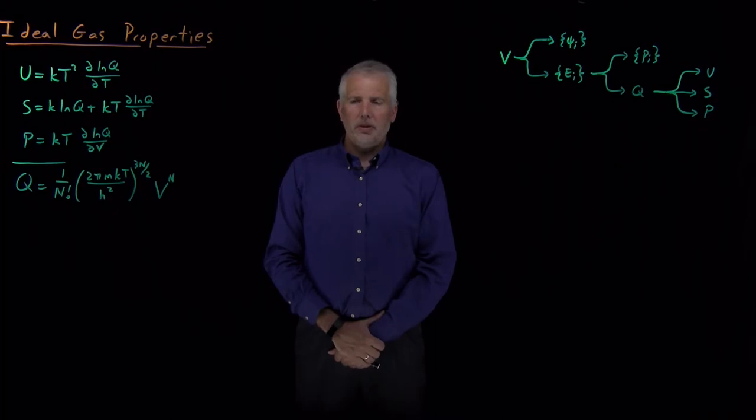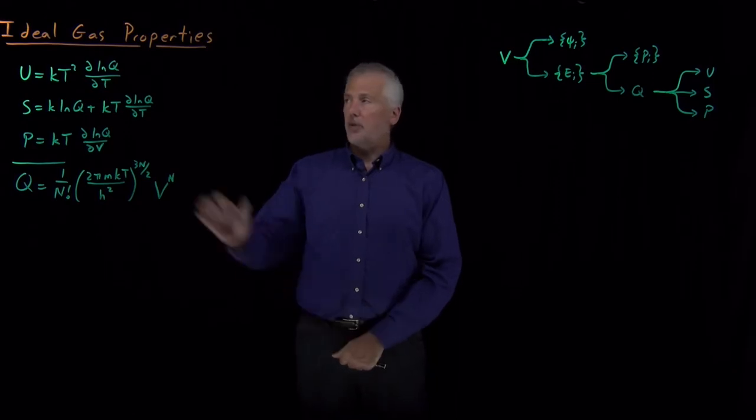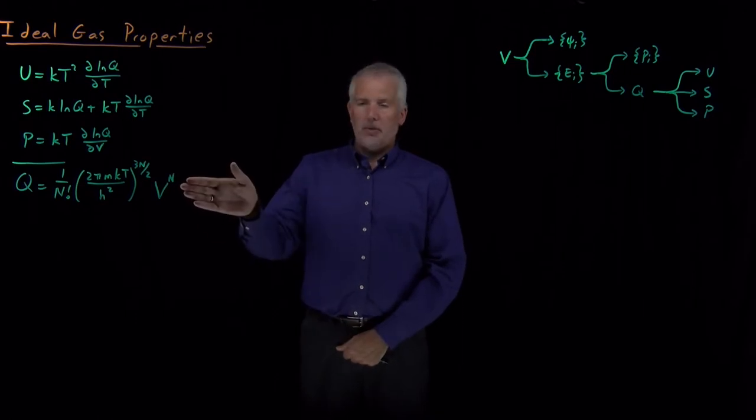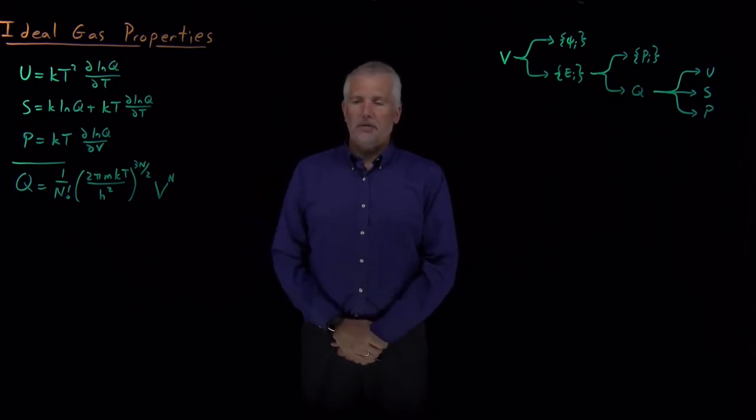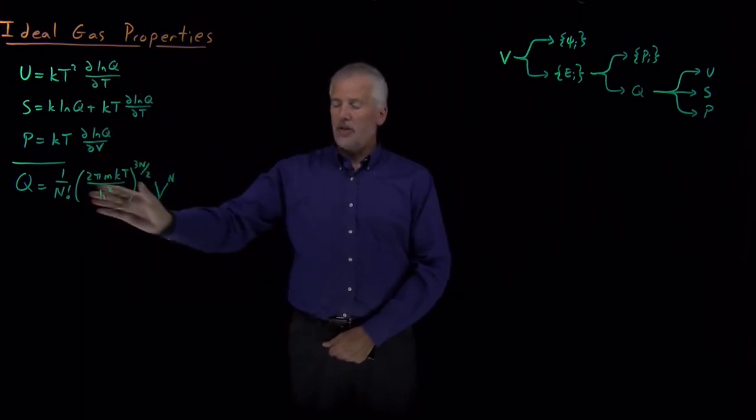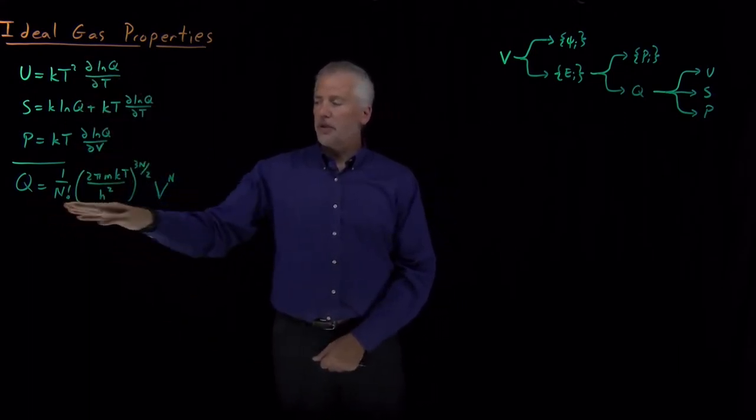Okay, we've finally made it to a position where we're able to get some really useful and interesting results for an ideal gas, which is what we're calling a 3D particle in a box in the classical limit. We've been able to write down the partition function for a three-dimensional particle in a box in the classical limit or for an ideal gas, so we can use this partition function to describe a gas.